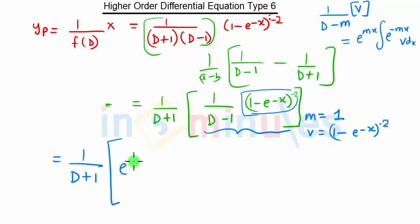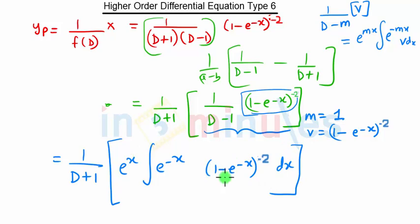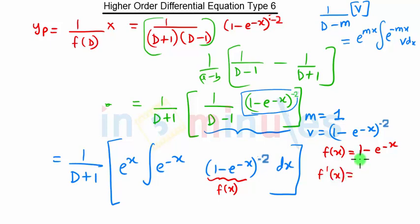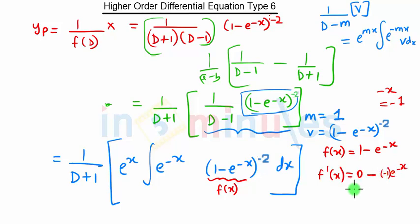We apply this formula where m is 1 and v is (1 minus e raised to minus x). So we get e raised to x, integration of e raised to minus x into (1 minus e raised to minus x) dx. Now to solve this integration, let f of x equal to (1 minus e raised to minus x). The derivative of f of x: derivative of 1 is 0, minus derivative of e raised to minus x is e raised to minus x into minus 1, which becomes e raised to minus x.